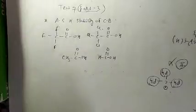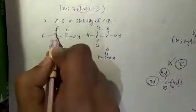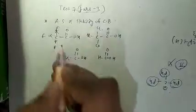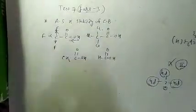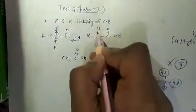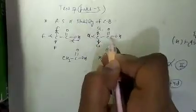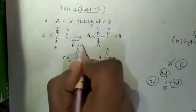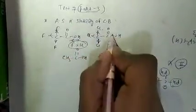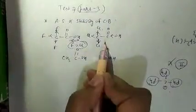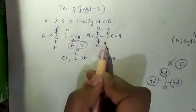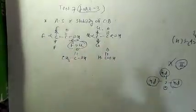Fluorine is the most electron withdrawing group, so it makes the OH bond weaker. Chlorine is also an electron withdrawing group, but the power of fluorine is more than chlorine. Therefore, acidic strength of trifluoroacetic acid is more than trichloroacetic acid.